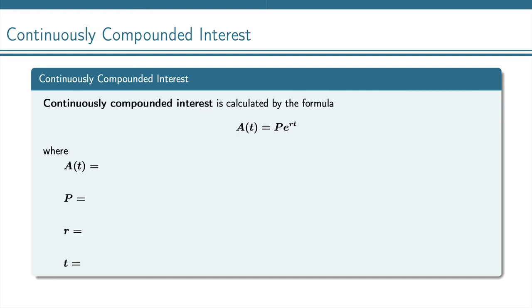From seeing how the natural exponential function arises from increasing the number of times compounded, this leads us to this continuously compounded interest formula. And this is where if we are gaining interest at every moment on the interest that we just earned, this is the formula that we use.